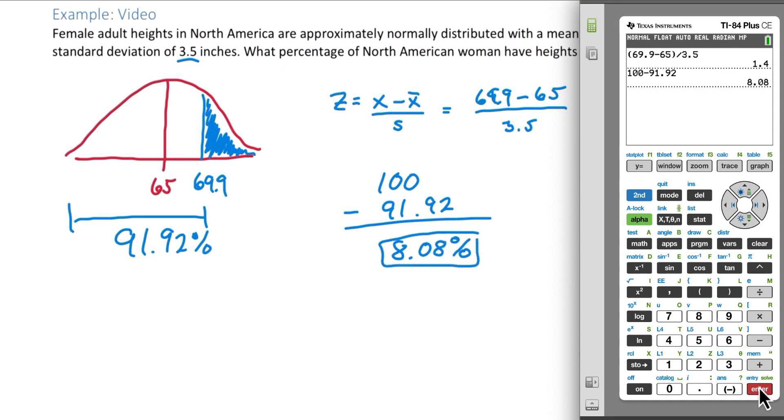So this is the percentage of female adult heights in North America that exceeds 69.9 inches.